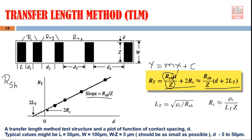The second thing: if we look at the straight line and go to the y-intercept, at that intercept the value of D is 0. So if X is 0, Y equals C. Here, if D is 0, then RT equals 2Rc because 2Rc is the constant term C. So this y-intercept gives you the value of 2Rc — the contact resistance is the second parameter you can find with the help of this structure and technique.